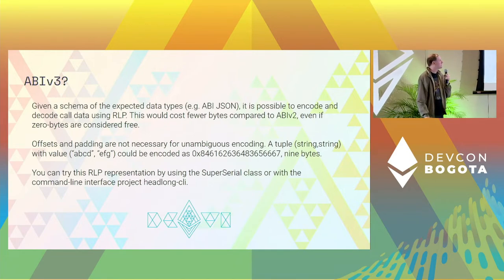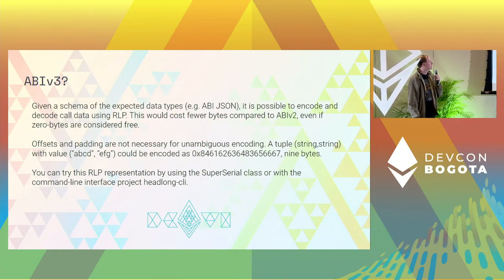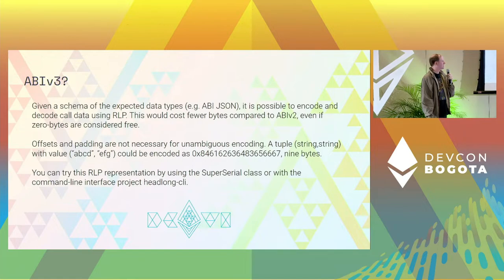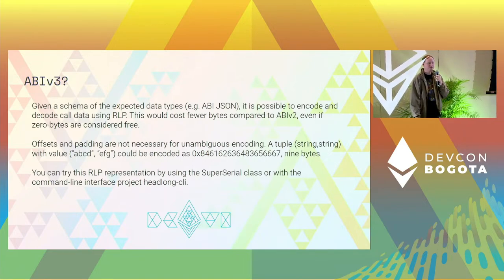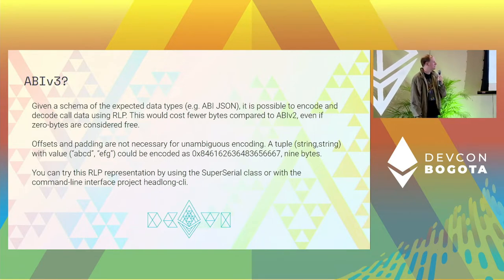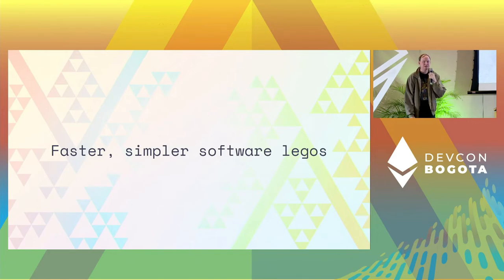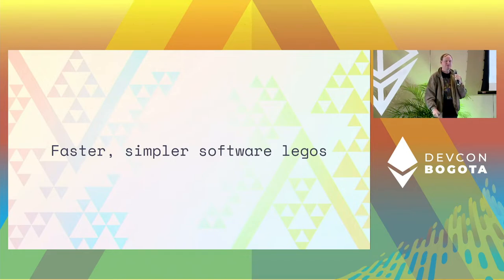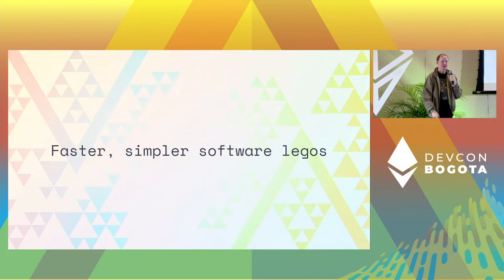I've been talking to some people recently about a possible ABI v3. I wrote a command line interface that can encode arguments as RLP and uses a lot less bytes because you don't have offsets and all that zero padding. You can try that out — Headlong CLI is the command line interface. Faster, simpler software Legos. I just want people to be able to build modular stuff so you're not weighed down by all these dependencies and complex frameworks where you have to read all this documentation.